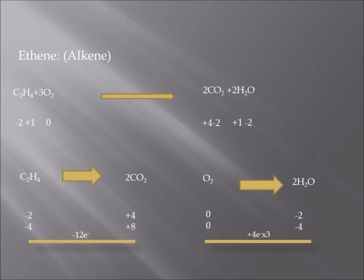When all these steps are settled, we should compare the number of electrons gained and lost to see if it is necessary to multiply by a certain number to balance them. There are 12 electrons lost from C2H4 to carbon dioxide, while only 4 electrons come from oxygen to water. Therefore, the oxygen half must be multiplied by 3 to also lose 12 electrons. The last step is to balance hydrogen atoms in order to achieve a balanced equation.